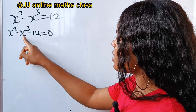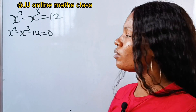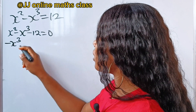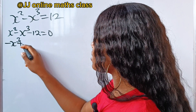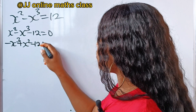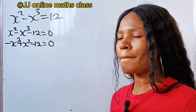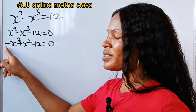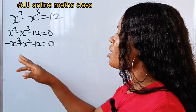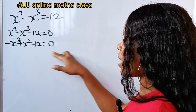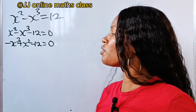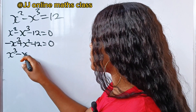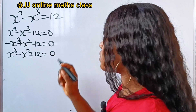Now let's bring this x to the power of 3 to its position. If we do that, that means we have minus x to the power of 3, then plus x squared minus 12 is equal to 0. But it's weird leaving this minus sign at the beginning of the equation, so to remove it we are going to multiply through by minus 1. If we do that, this becomes x to the power of 3, this becomes minus x squared, this becomes plus 12 is equal to 0.